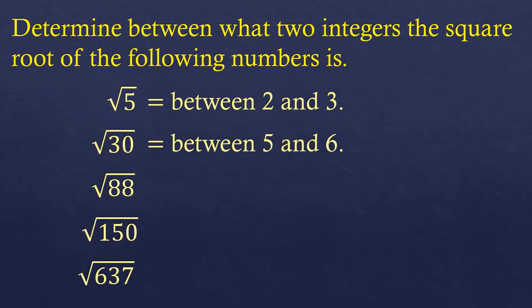Next for square root of 88, the closest which is smaller than 88 is 81, because 81 is a perfect square. It's the square of 9. Square root of 81 is 9, so that means the square root of 88 is in between 9 and 10. It's around 9 point something.